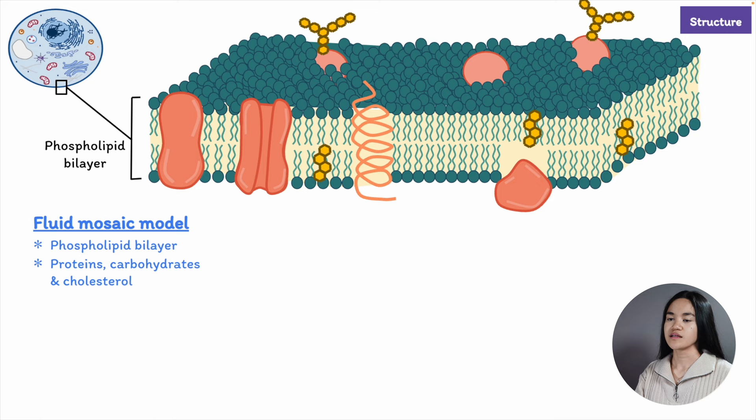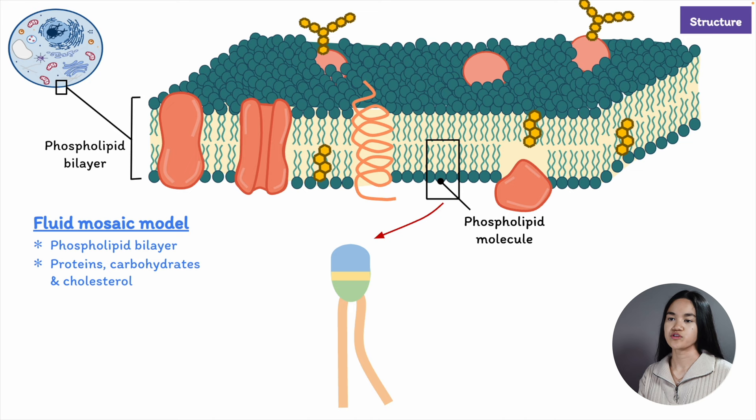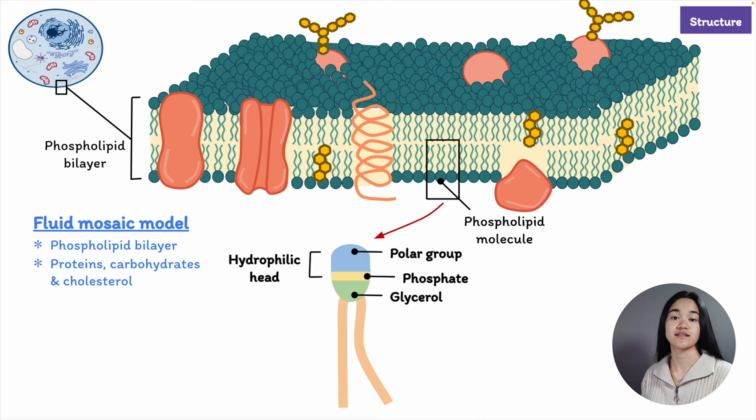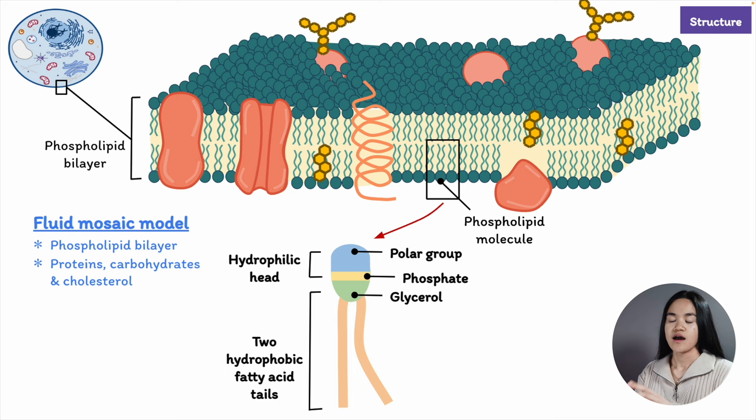Let's zoom in on the structure of a phospholipid. It's composed of a hydrophilic or polar head containing a negatively charged phosphate and glycerol, and two hydrophobic fatty acid tails. Hydrophilic means it likes water, and the tail is hydrophobic or lipophilic, meaning it doesn't like water but loves fats.